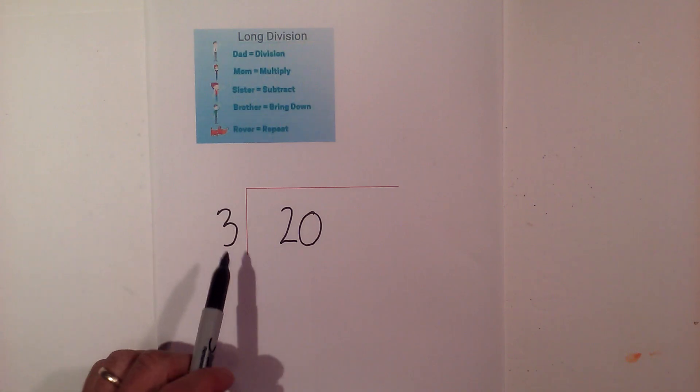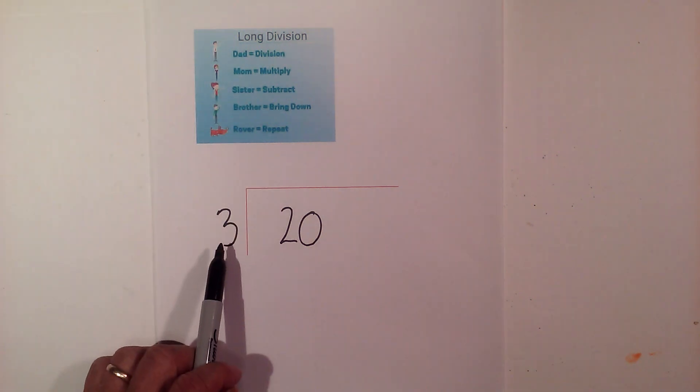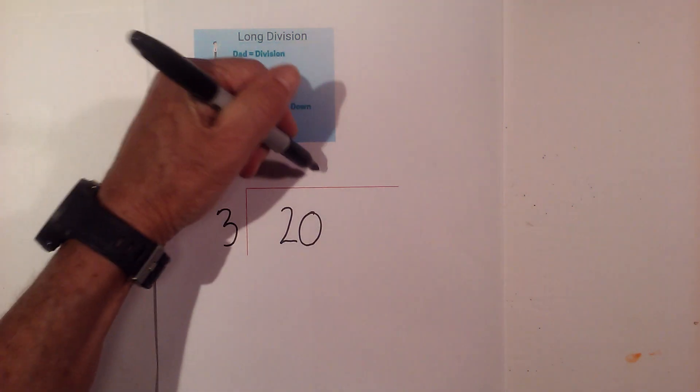Okay, on this problem we're going to go 20 divided by 3. So I'm going to begin with division. 3 goes into 20. 3 will not go into the 2, so 3 goes into 20. 3 goes into 20 six times.